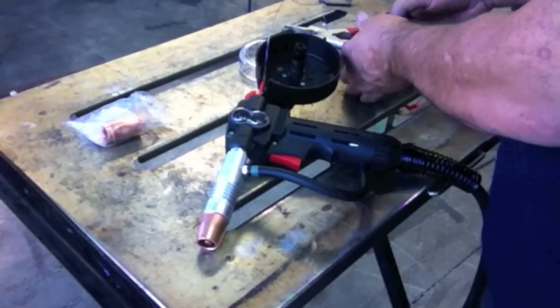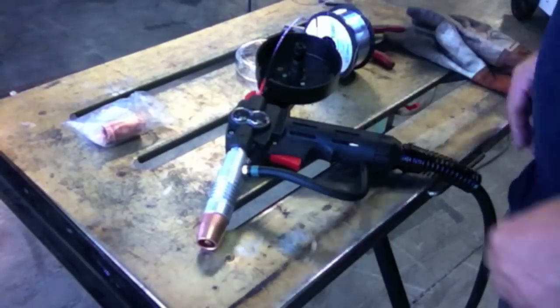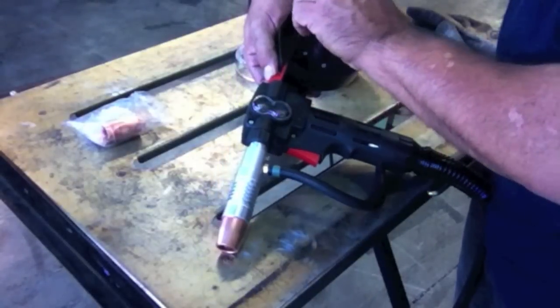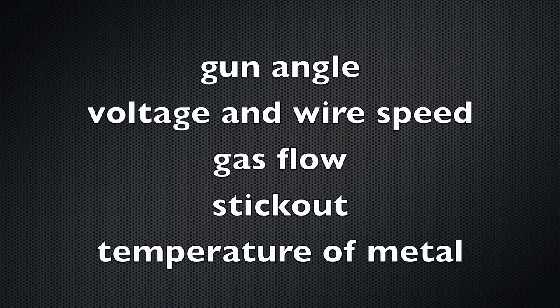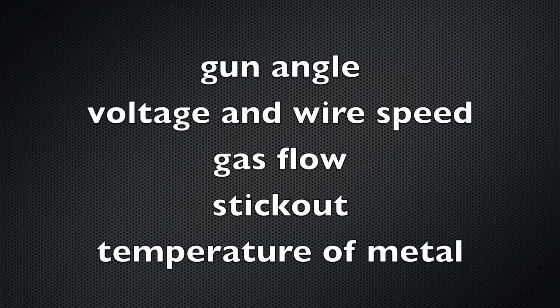Aluminum is a lot harder to get the settings dialed in, so I'm going to hook this spool gun up and kind of know what I'm in for because aluminum just exaggerates everything. Everything that can go wrong on steel will just go wrong worse on aluminum. Gun angle, voltage and wire feed speed, gas flow, stick-out, temperature of the metal all matter a whole lot more on aluminum than on steel. That's just the way it is.